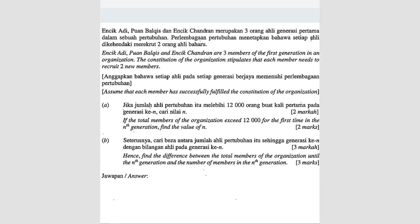Question number 4. Enchei Adi, Puan Balkes and Enchei Chandran are three members of the first generation in an organization. The constitution of the organization stipulates that each member needs to recruit two new members. Assume each member has successfully fulfilled the constitution of the organization.